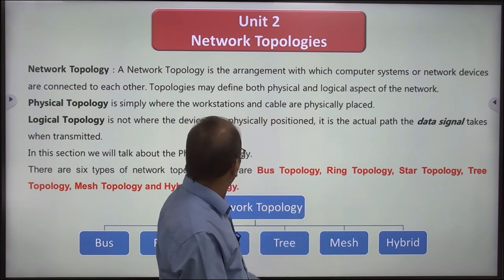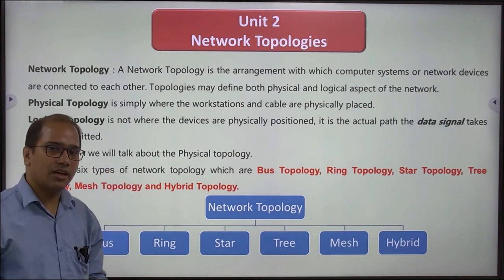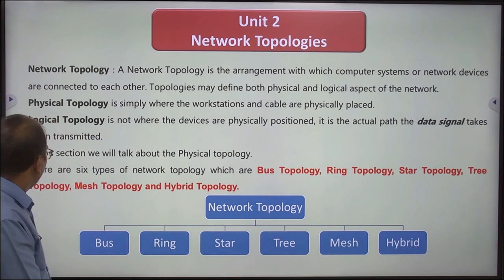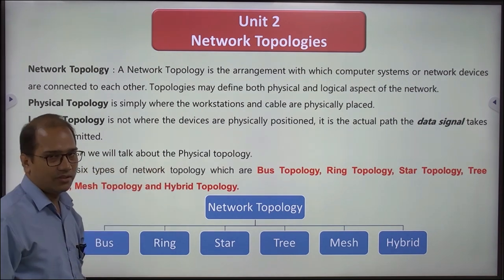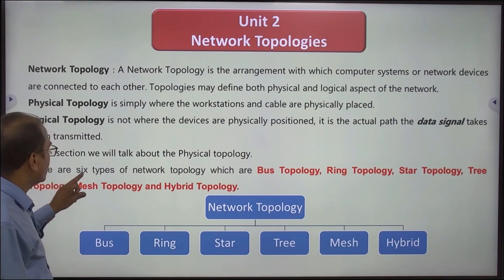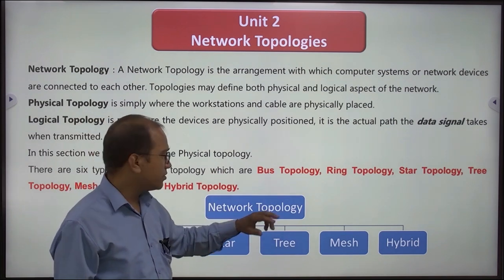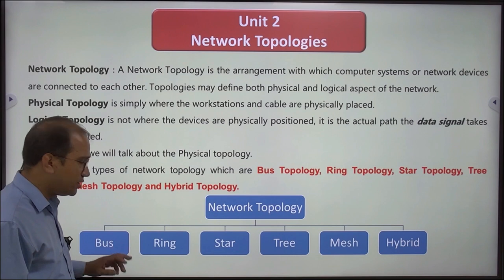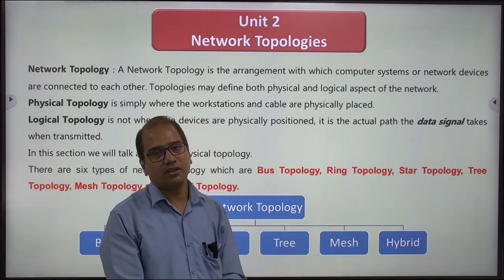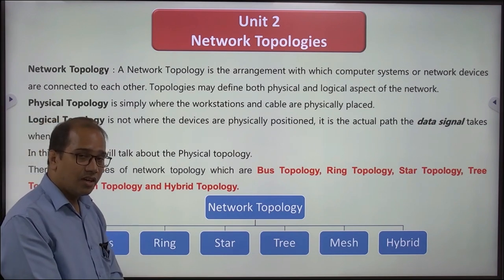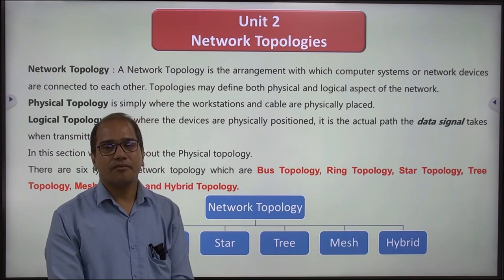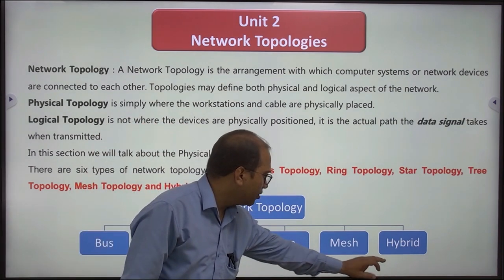Physical topologies six types की होती हैं — Bus, Ring, Star, Tree, Mesh और Hybrid topology। इनको एक-एक करके समझेंगे। हर topology का अपना advantage और disadvantage होता है। According to need हम उन्हें अपने network में use करते हैं — जैसी requirement होगी, वैसी topology use करेंगे।